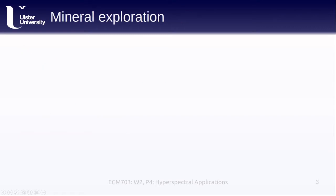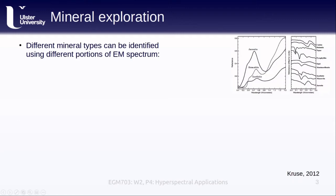Mineral exploration, or looking for evidence of particular minerals underneath the ground, is a big part of the mining process. As we've discussed previously, different mineral types can be identified using different portions of the electromagnetic spectrum. For iron-rich minerals, the visible and near-infrared portion of the electromagnetic spectrum is quite useful. Here we have spectral signatures for some iron-rich minerals, such as jarosite, hematite, and goethite. You can see that these are quite varied at visible and near-infrared wavelengths, so we can use these wavelengths to help identify these different minerals.